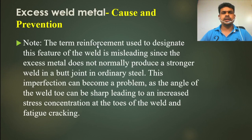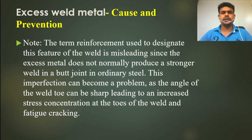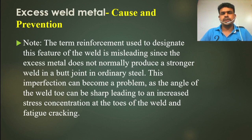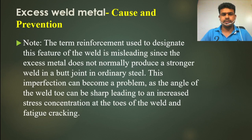Note for excess weld metal: the term 'reinforcement' used to describe this feature of the weld is misleading, since excess metal does not normally produce a stronger weld. In a fillet or butt joint in ordinary steel, this imperfection can become a problem as the angle at the weld toe can be sharp, leading to increased stress concentration at the toe of the weld and cracking. The toe angle must be acceptable — otherwise it is unacceptable.